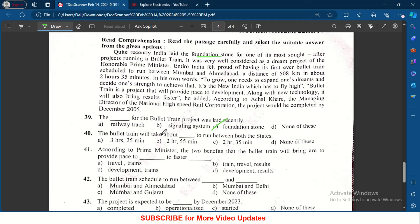The bullet train will take about dash to run between both cities or both states - it is 2 hours 35 minutes, so 2 hours 35 minutes is the answer. According to the Prime Minister, the two benefits that bullet train will bring are provide pace to dash and to faster dash: pace to development and results faster, so development results.